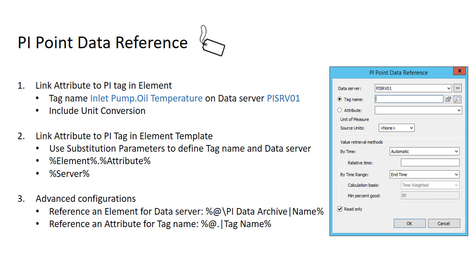The second way, which is slightly more complex, will be to create it in the element template. We'll use substitution parameters to define the tag name and data server. These are %element% to bring in the name of the element, and %attribute% to bring in the name of the attribute, which will then be used to look up the tag name on the PI server. We'll also use %server%, which brings in the default PI Data Archive name on this client machine. Check out the advanced AF playlist to see more ways of using substitution parameters.